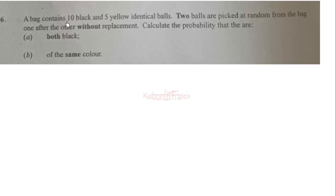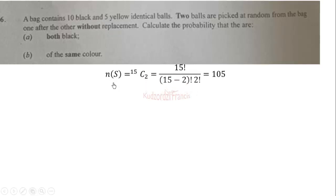The sample space is given by the number of ways we can select two balls from 15 total balls. So the number of elements in the sample space, n(S), is 15C2, which equals 15! over (15−2)! times 2!, giving us 105.